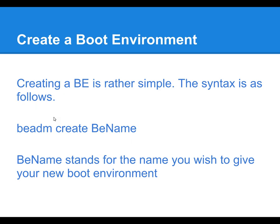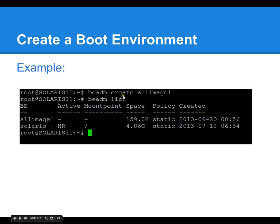To create a boot environment, you use beadm create followed by the new boot environment name you want to use. Here's an example: we use beadm create and we are going to create a new boot environment called S11 image 1 for Solaris 11 image 1. Then we use beadm list to list that boot environment. Now you can see that we have two boot environments — Solaris 11 image 1, which is not currently active and won't be active on the next reboot.